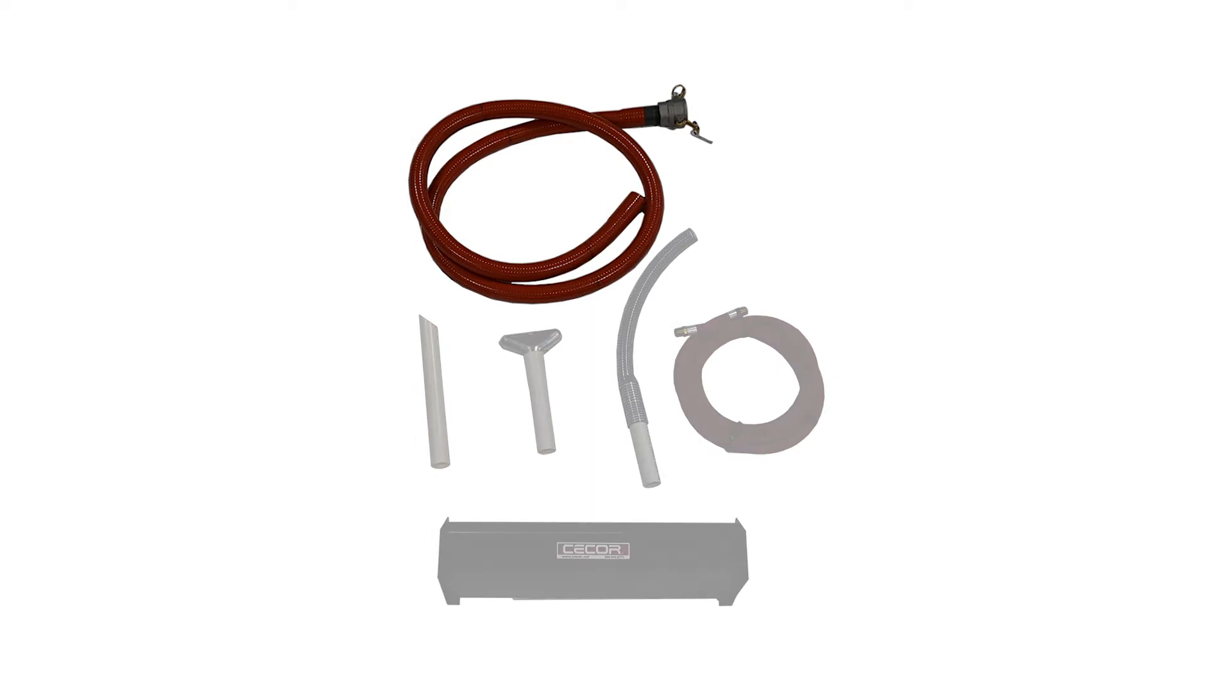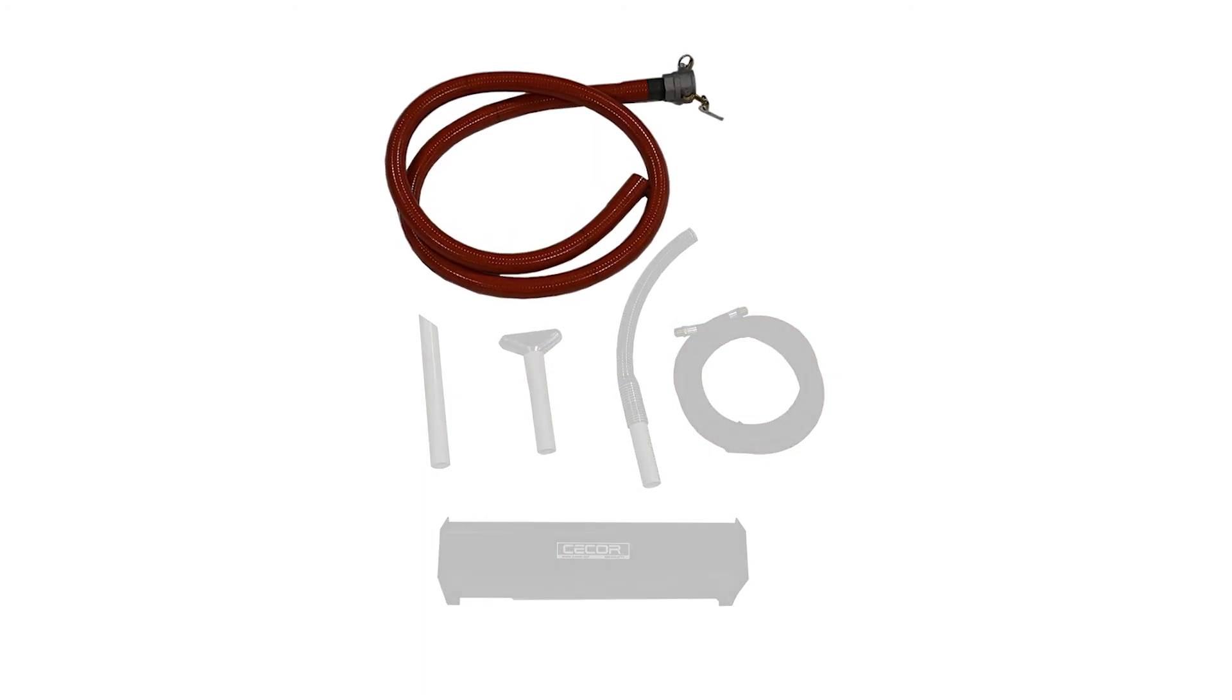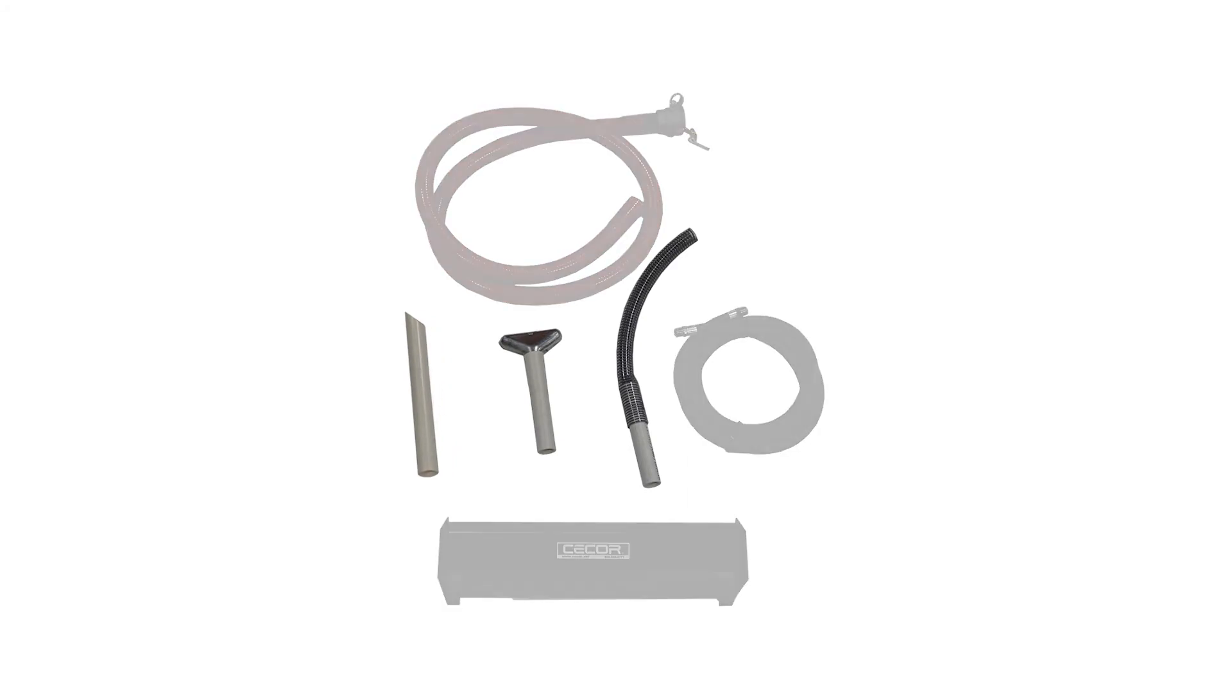Each Sump Shark comes with a 1.5-inch by 16-foot heavy duty suction hose. The three suction tools are the straight nozzle, flared nozzle, and flexible nozzle.